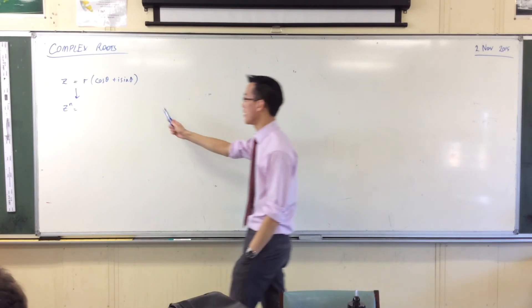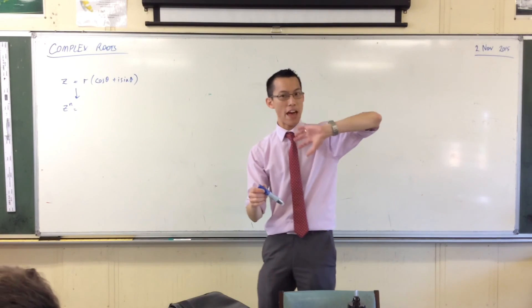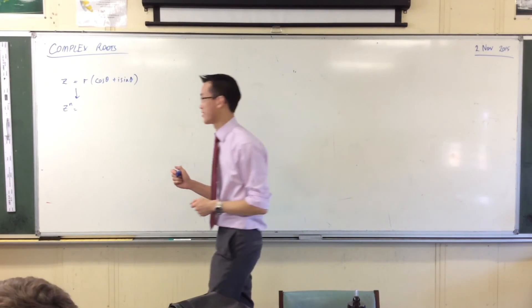Given any complex number in polar form, De Moivre's theorem states that if we raise that complex number to the nth power, what do I get?